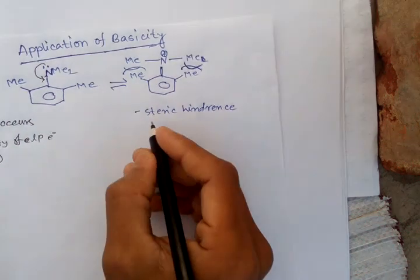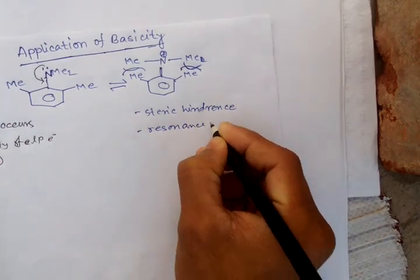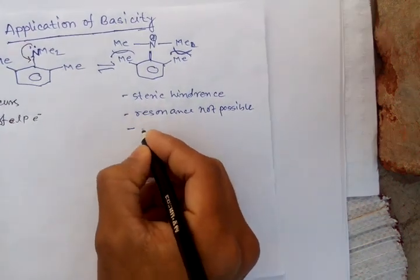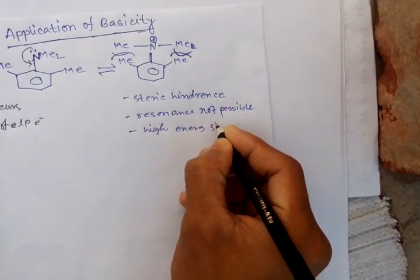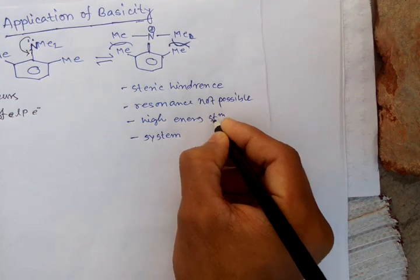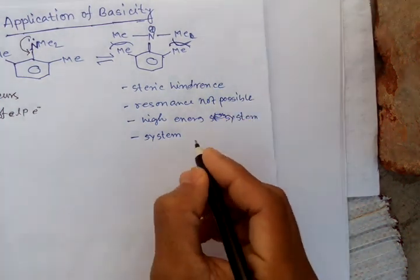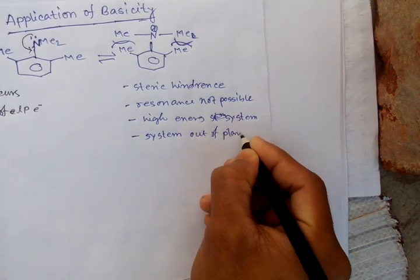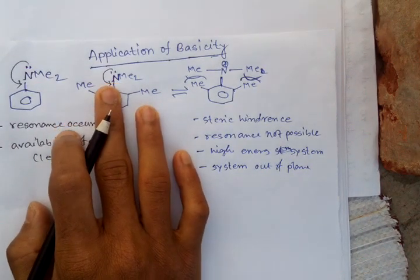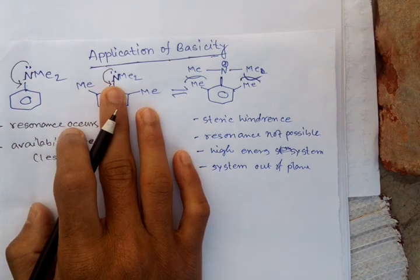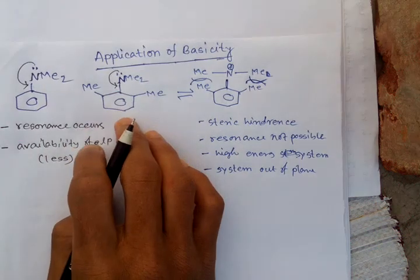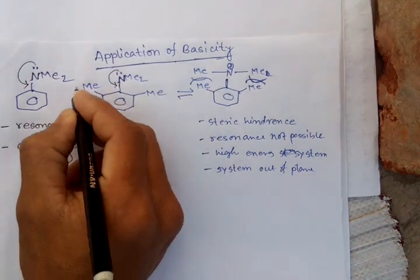Because of this steric hindrance, resonance is not possible. This is a high energy system and the system is out of plane. For the second system, the lone pair located on the nitrogen atom is very available to donate electrons, so sharing of electrons in this system is very good, making it more basic than the first one.